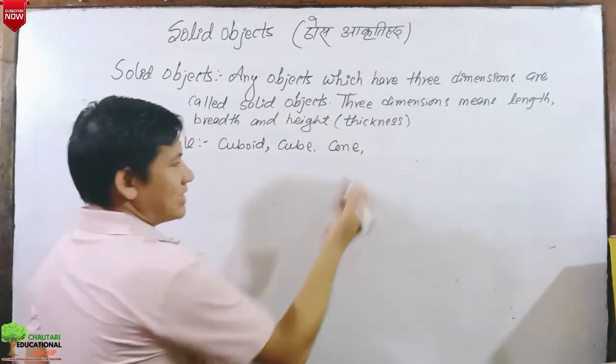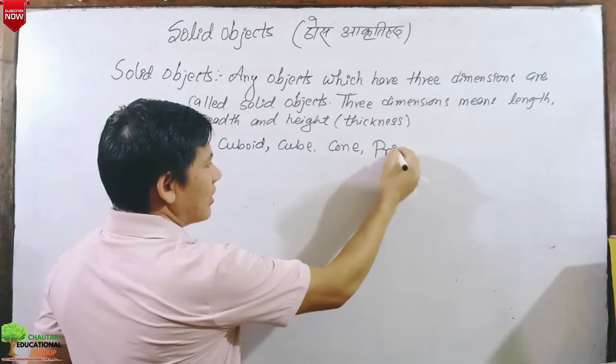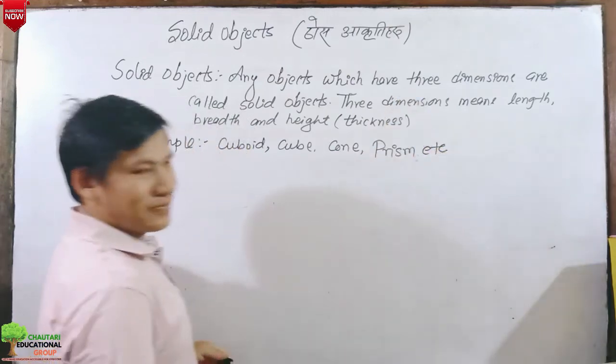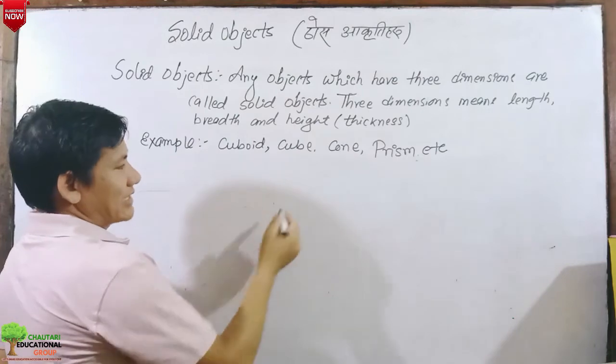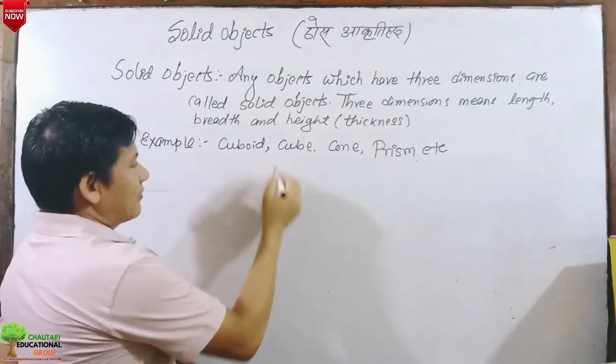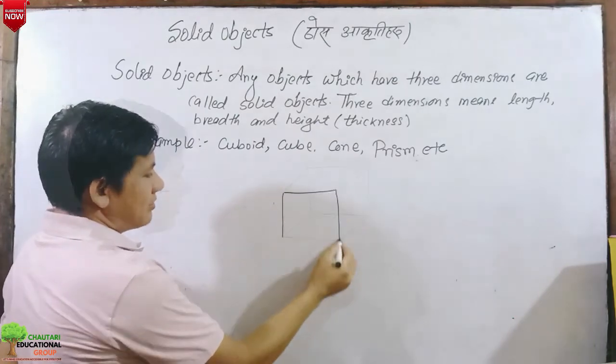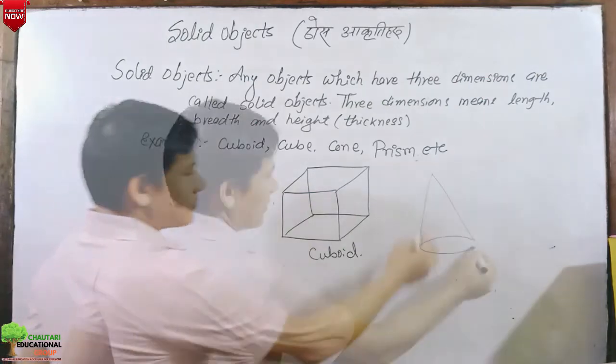Solid objects like cone, prism, etc. These are solid objects, examples of solid objects. For example, cuboid means this is cuboid, this is cone. These are examples of solid objects.